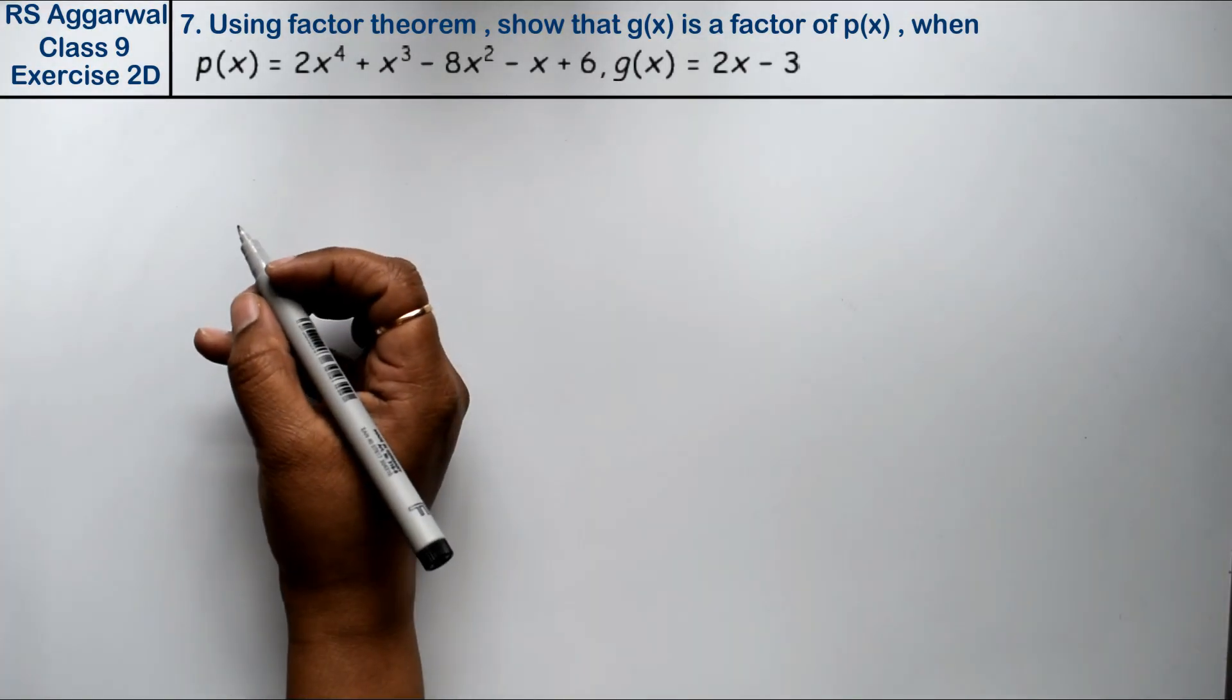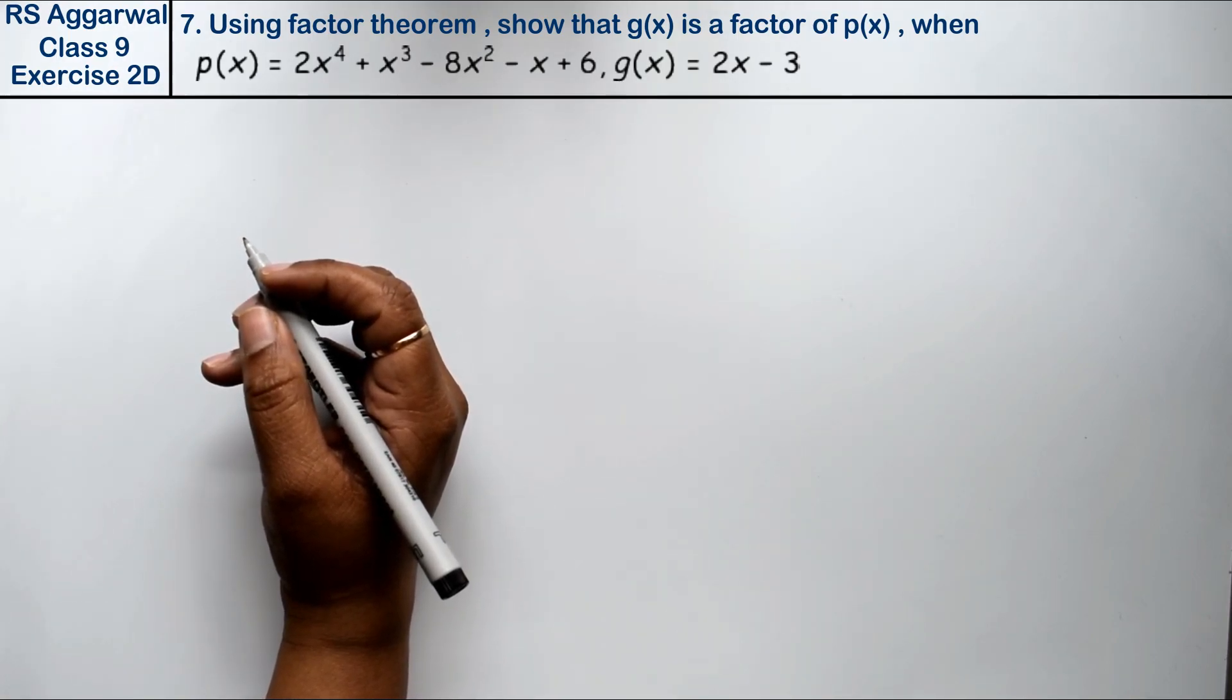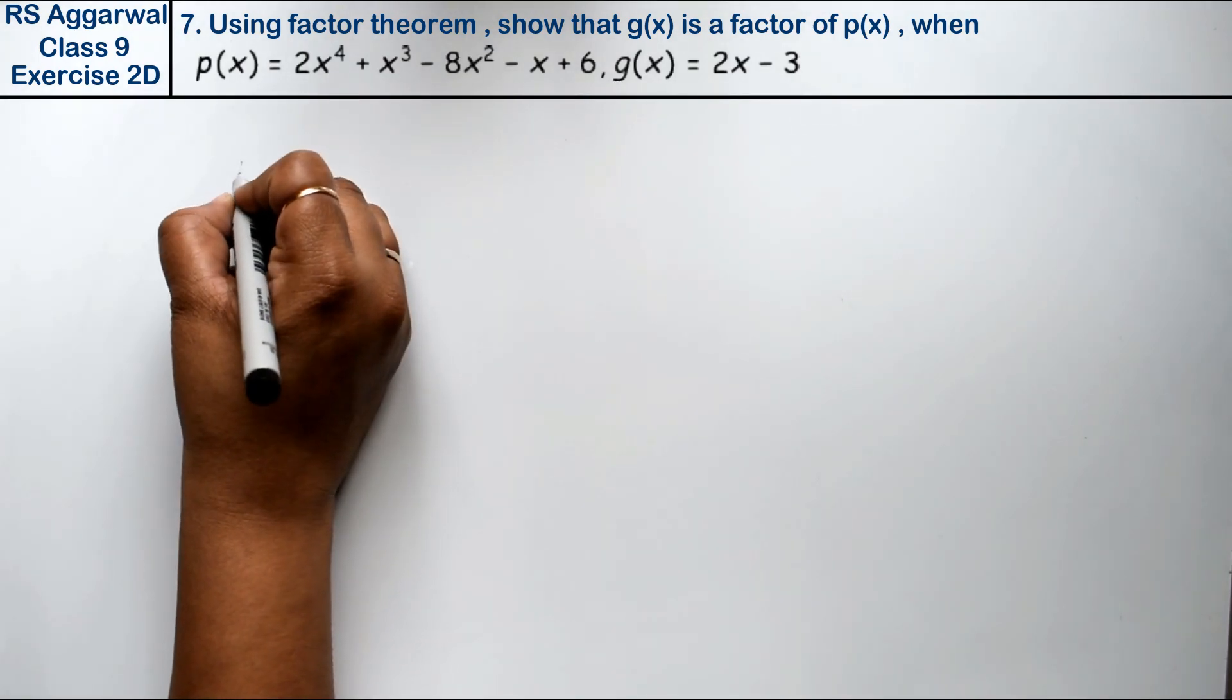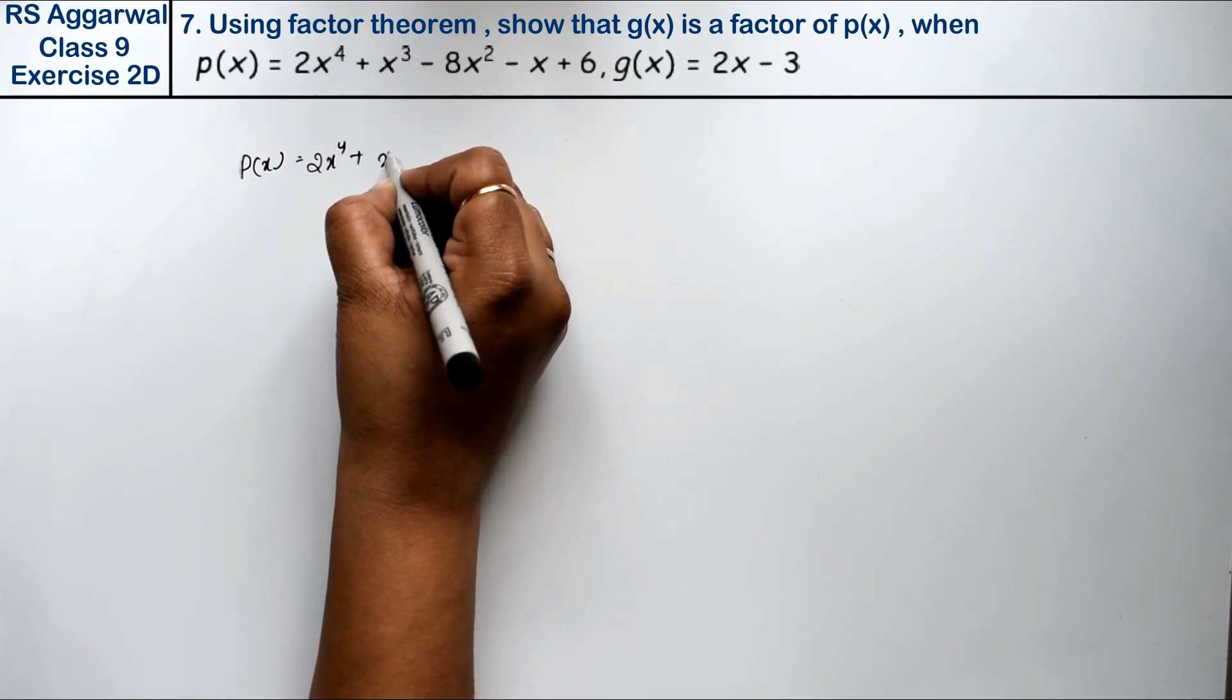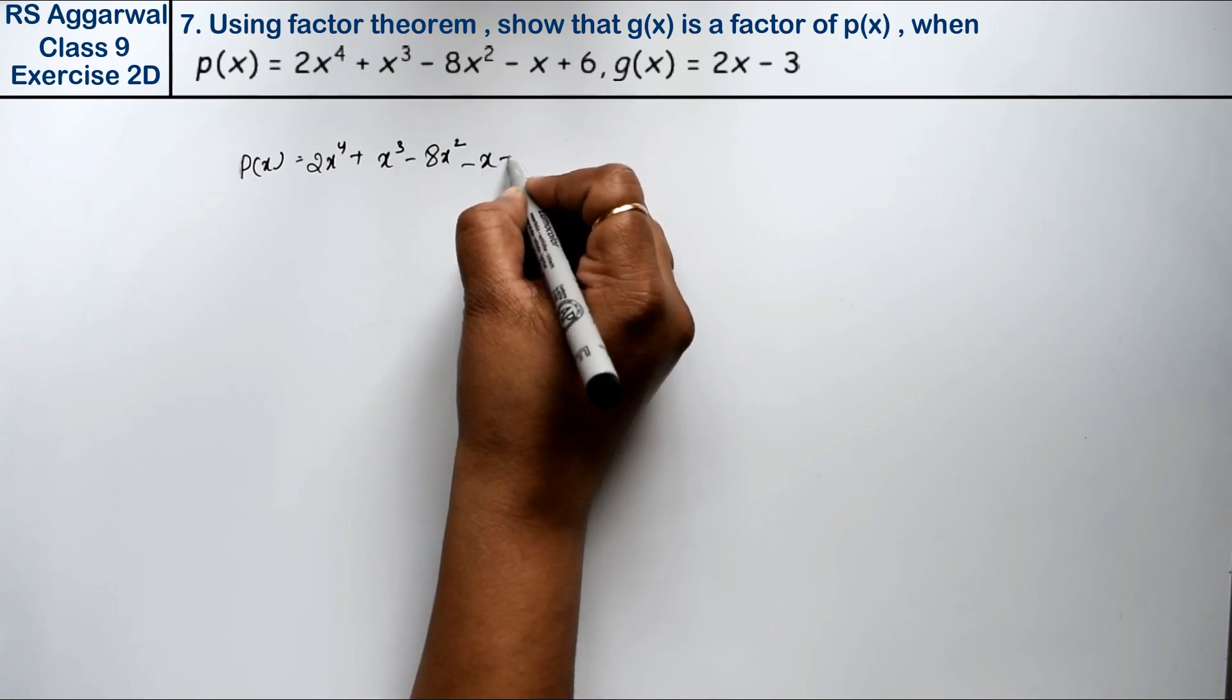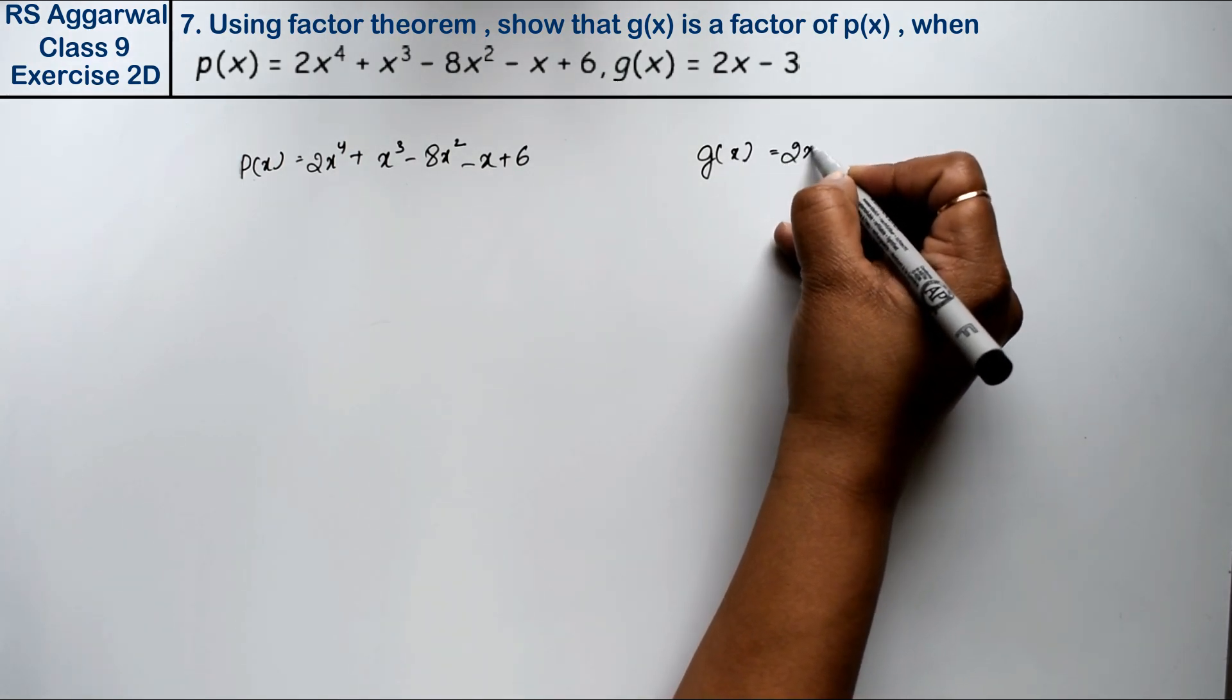Let's do question number 7 of exercise 2D, that is polynomial. Question number 7 is using factor theorem, show that g(x) is a factor of p(x). If p(x) is equal to 2x power 4 plus x cube minus 8x square minus x plus 6 and g(x) is equal to 2x minus 3.